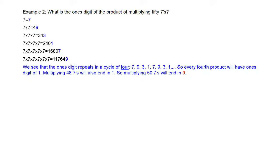But we are multiplying 50 sevens, so let's move two more steps from one. One more step gets us to 49 sevens with ones digit seven, and then 50 sevens gives a ones digit of nine. So 7 to the 50th power ends with the digit nine.